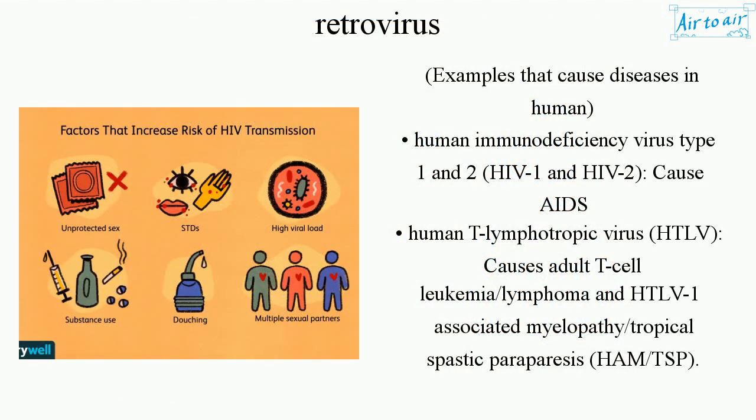Examples that cause diseases in humans: human immunodeficiency virus type 1 and 2, HIV-1 and HIV-2, cause AIDS; human T-lymphotropic virus, HTLV, causes adult T-cell leukemia, lymphoma, and HTLV-1 associated myelopathy, tropical spastic paraparesis (HAM/TSP).